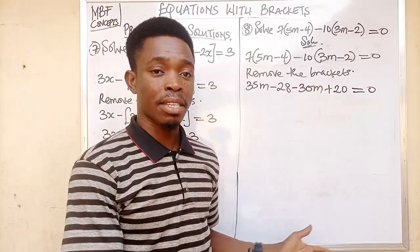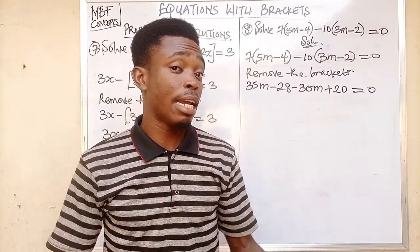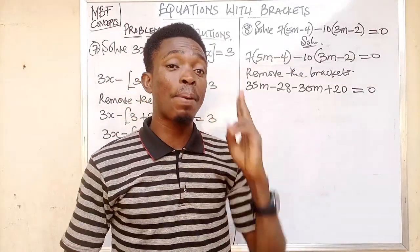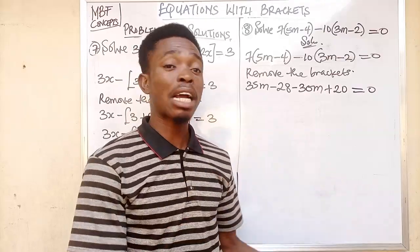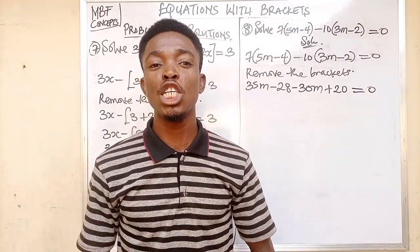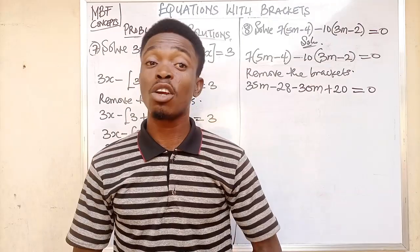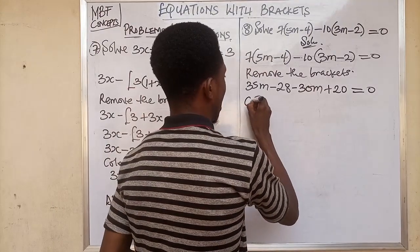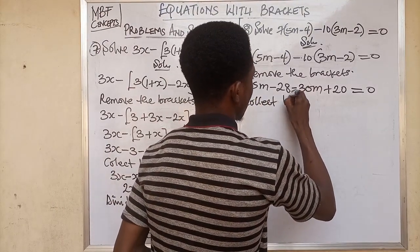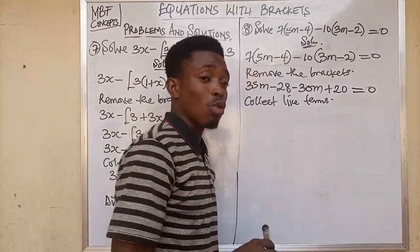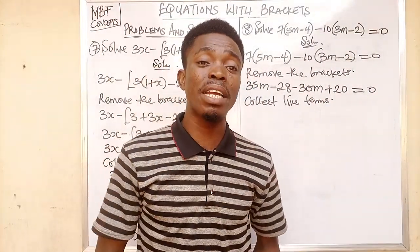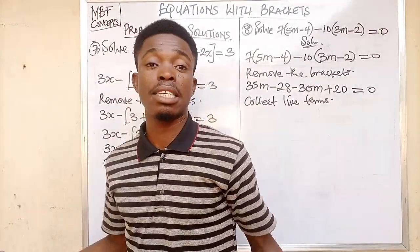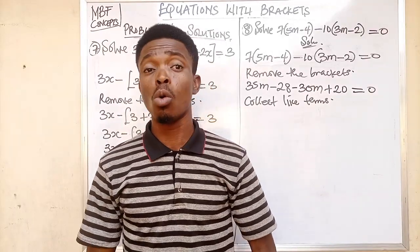All the major terms are on the left-hand side. Now we collect like terms. As I explained earlier, in equations with brackets you perform three operations: first, remove the brackets; second, collect like terms; and third, divide both sides by the coefficient of the variable. Let's proceed to step two.